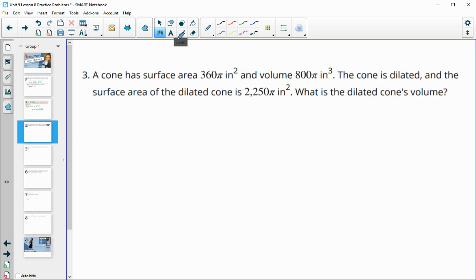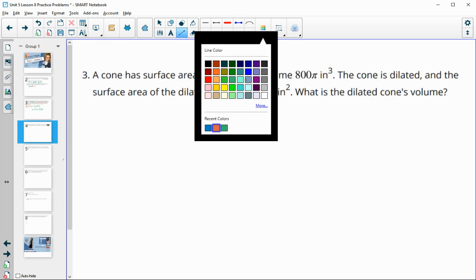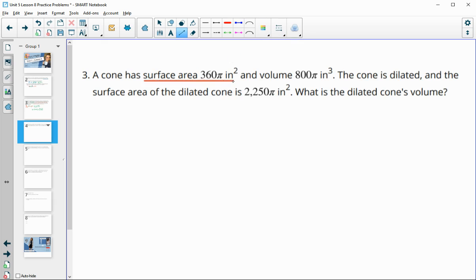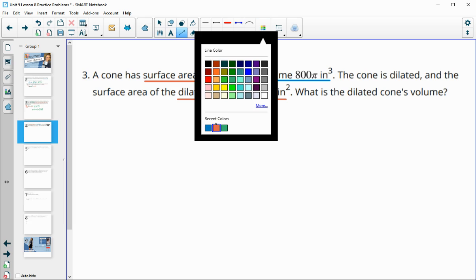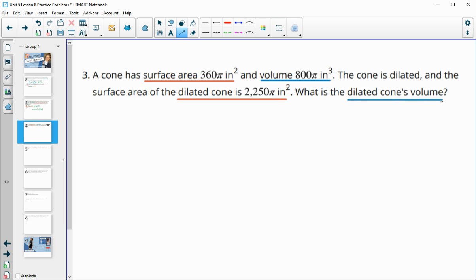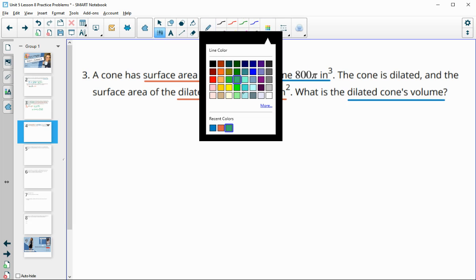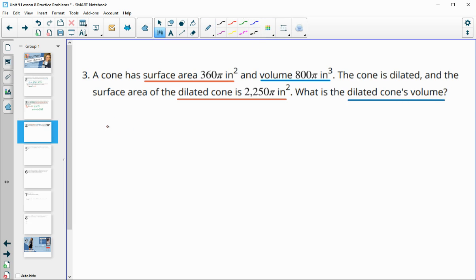Number three, a cone with a surface area of 360 pi inches squared and a volume of 800 pi inches cubed. The cone is dilated and the surface area of the new cone is 2,250 pi inches squared. What will the dilated volume be? They've given us both surface areas, so we'll be able to compare this.